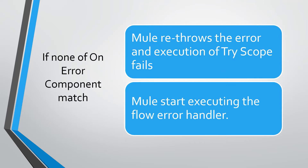If none of the on-error components match, Mule re-throws the error, execution of Try Scope fails, and in the flow, Mule does not process any component after Try Scope — it starts executing the flow error handler.